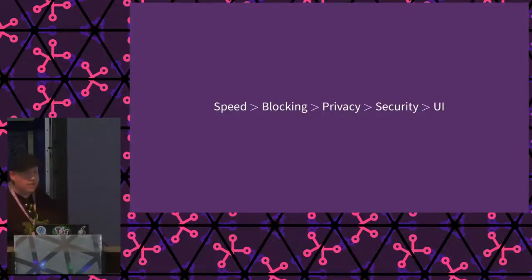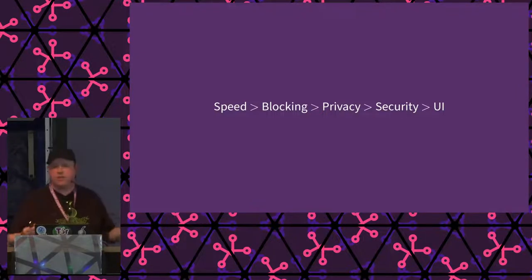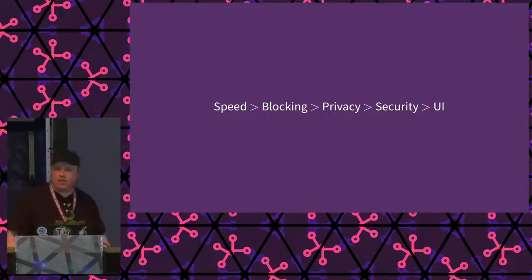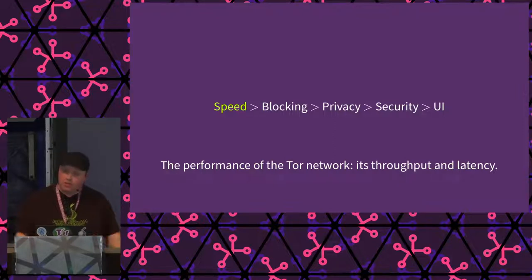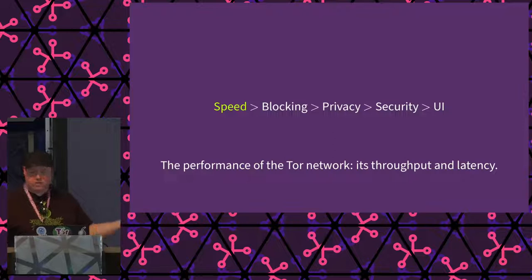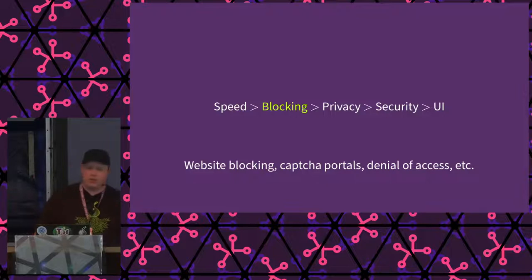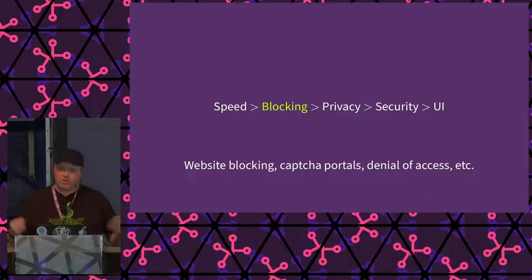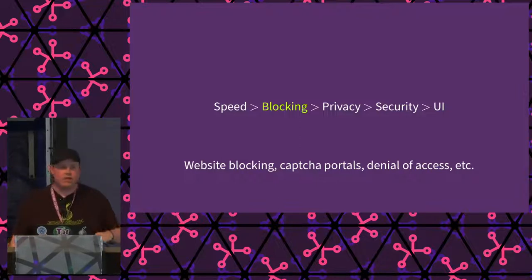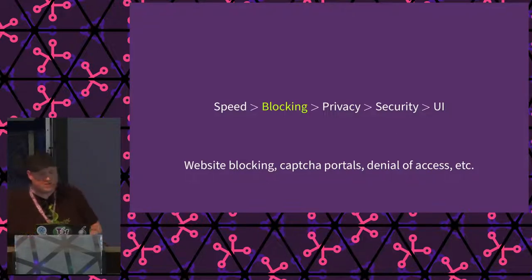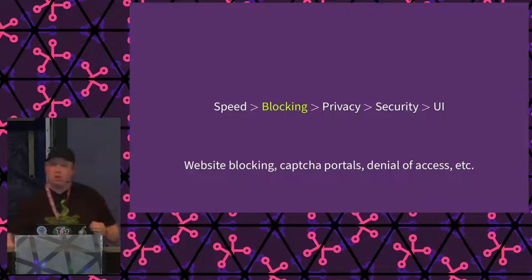A while ago, our UX and UI people sent out a survey to the Tor community asking what problems people were facing using Tor daily. The speed problem is related to network performance — many people feel Tor is slow and would like it to be faster. Blocking has to do with website blocking: we see a lot of CAPTCHA portals when using Tor browser from websites that deny access to Tor users. The blocking issue is particularly interesting in the near future because the big fruit company has announced a privacy relay for paid customers on their iPhone devices.